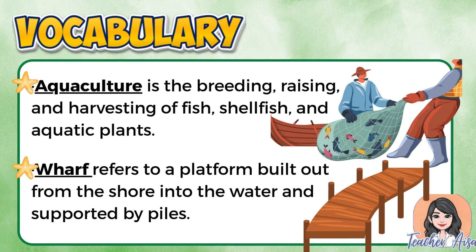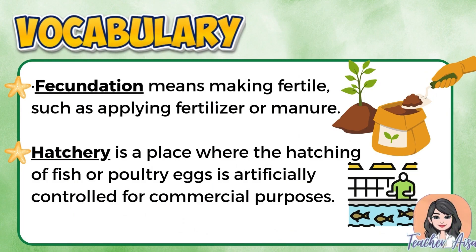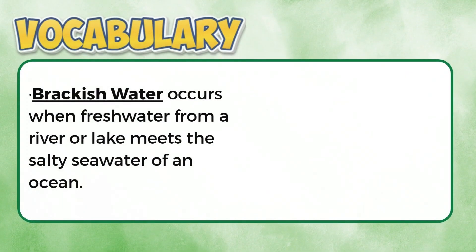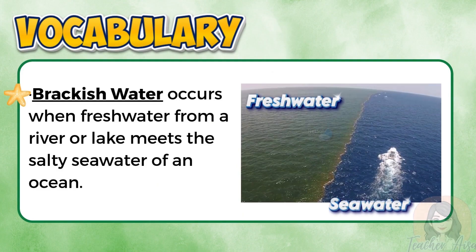A wharf serves as a docking place where boats can load and unload goods, making it very important in fishing and trade. Fecundation means making fertile, such as applying fertilizer or manure; in aquaculture it also refers to fertilizing fish eggs to increase the chances of survival and growth. A hatchery is a place where the hatching of fish or poultry eggs is artificially controlled for commercial purposes — hatcheries ensure that young fish, called fingerlings, are healthy and ready to be grown in ponds or cages. Brackish water occurs when fresh water from a river or lake meets the salty sea water of an ocean; this type of water is very suitable for raising fish like milkfish and shrimp.